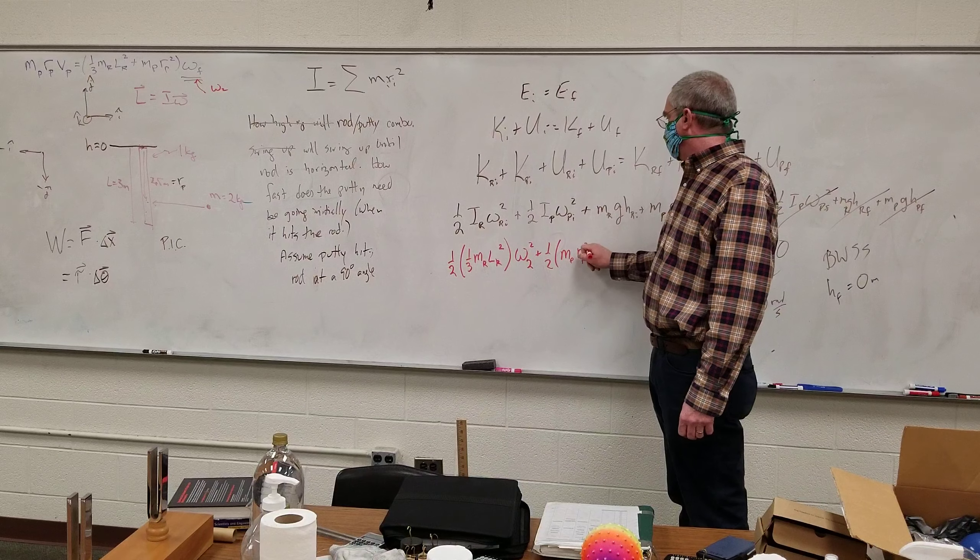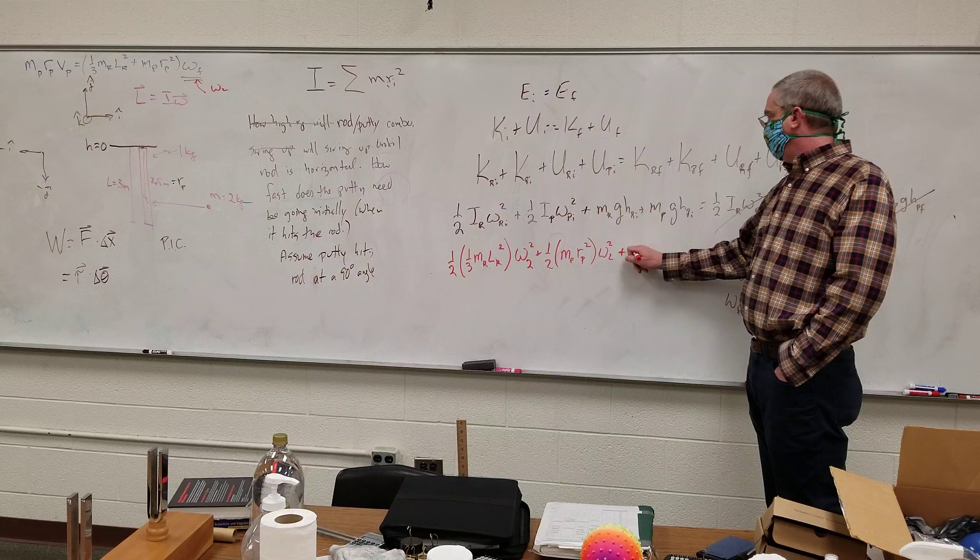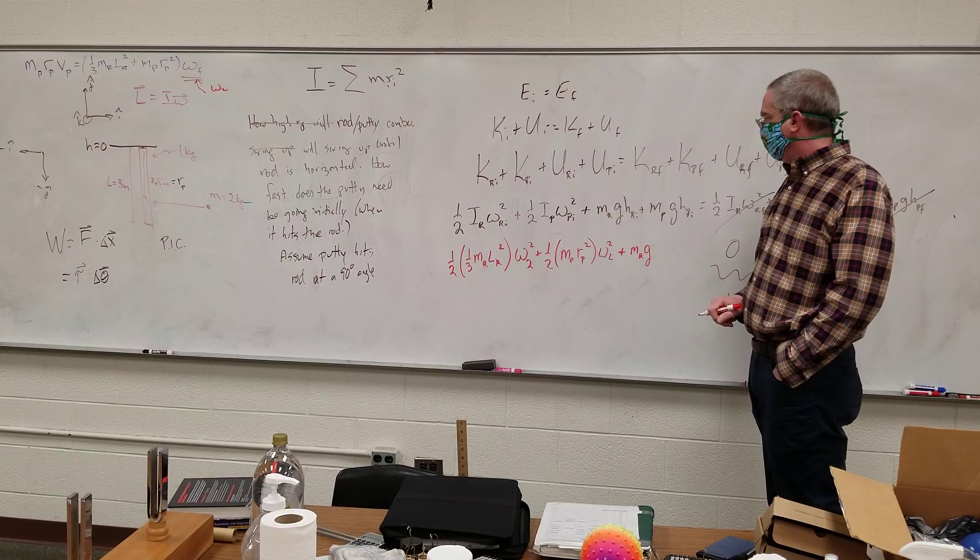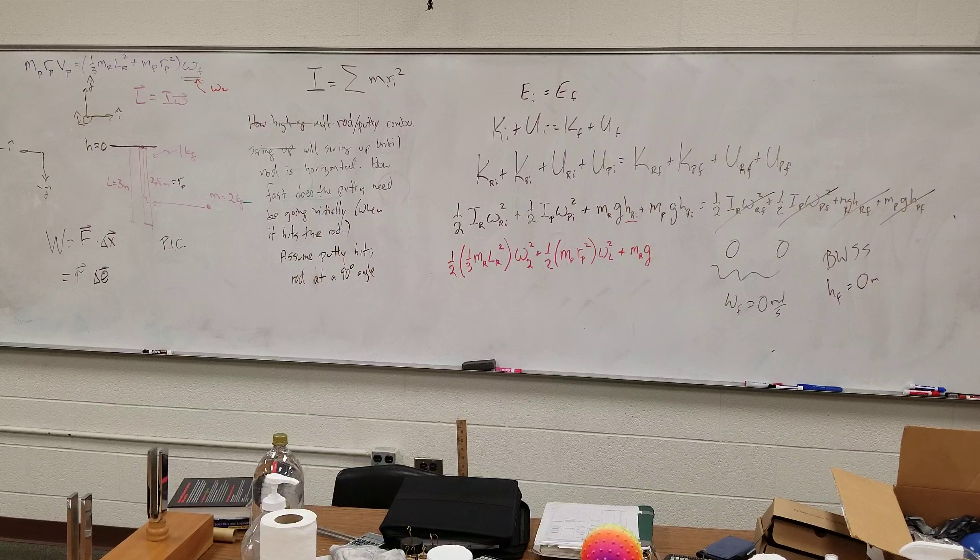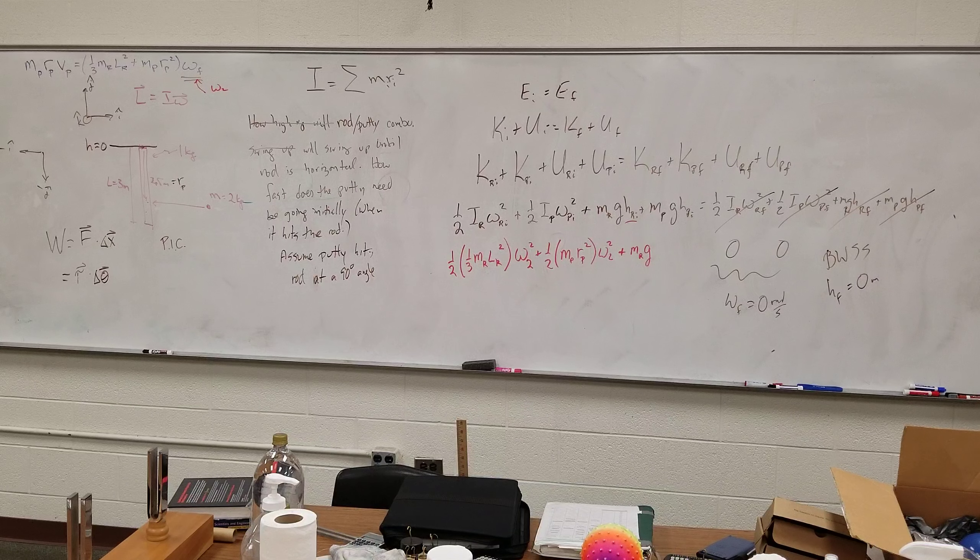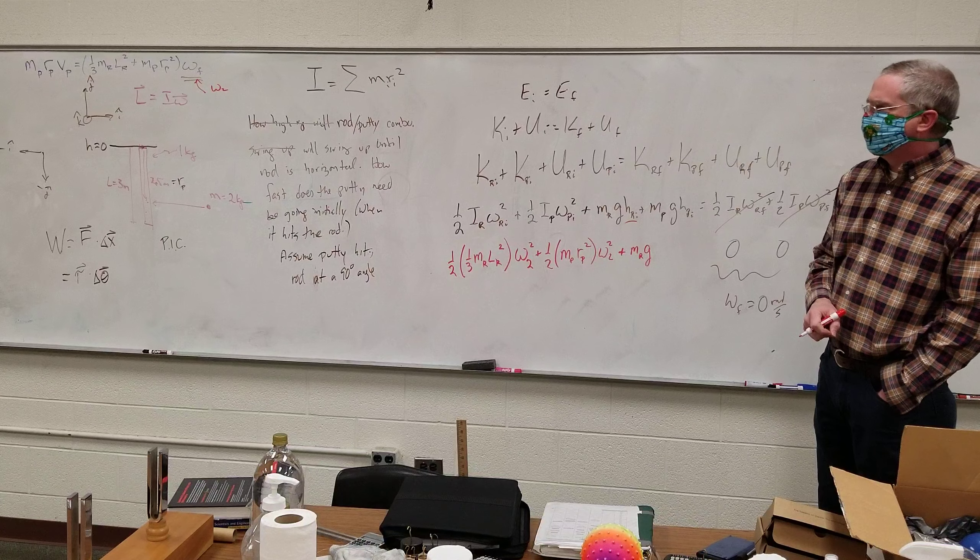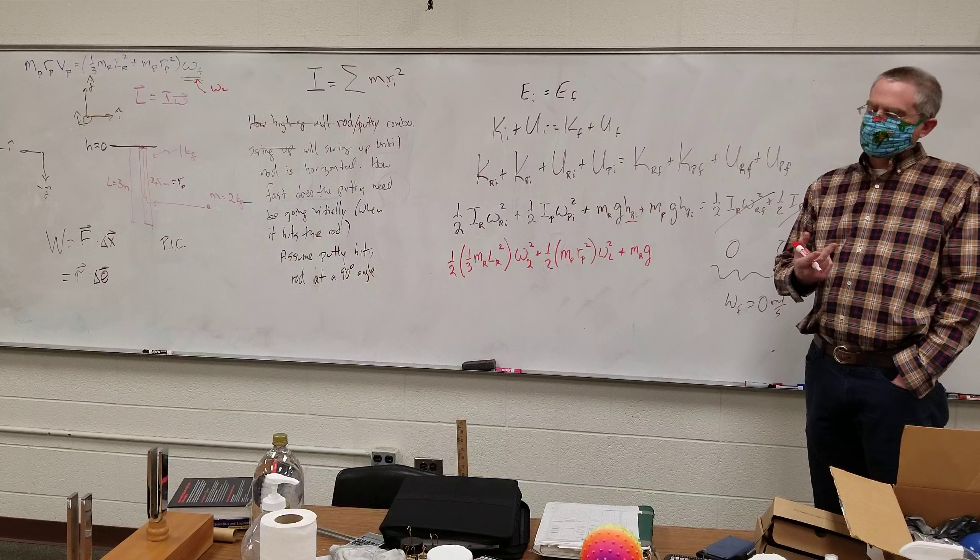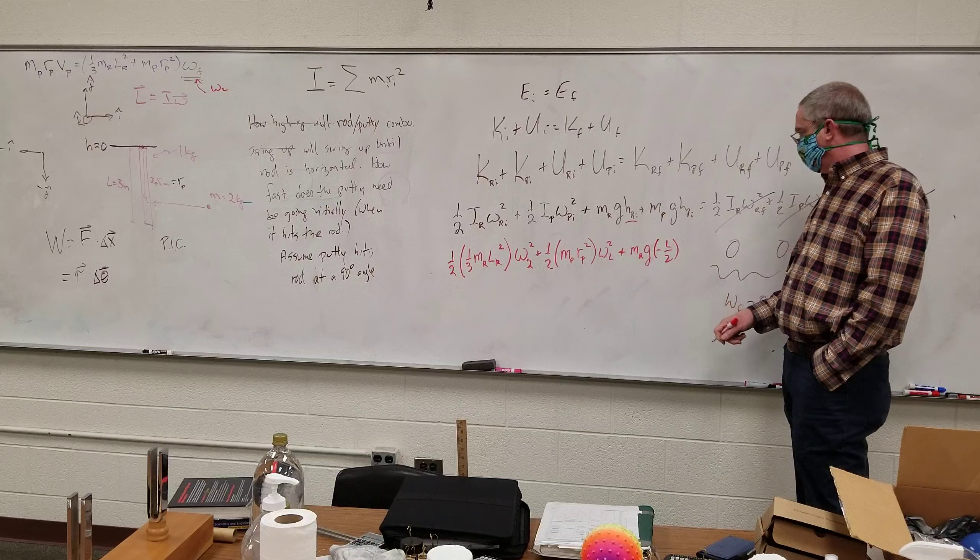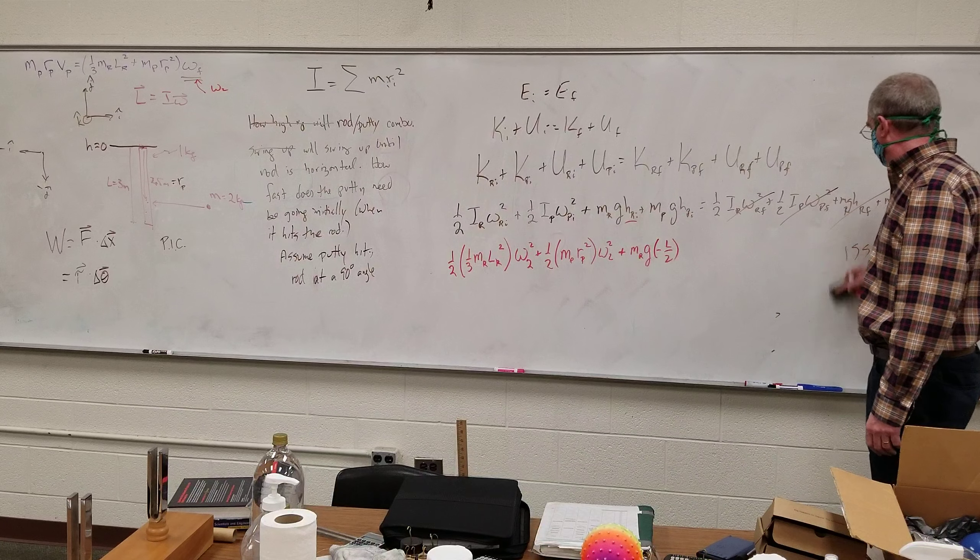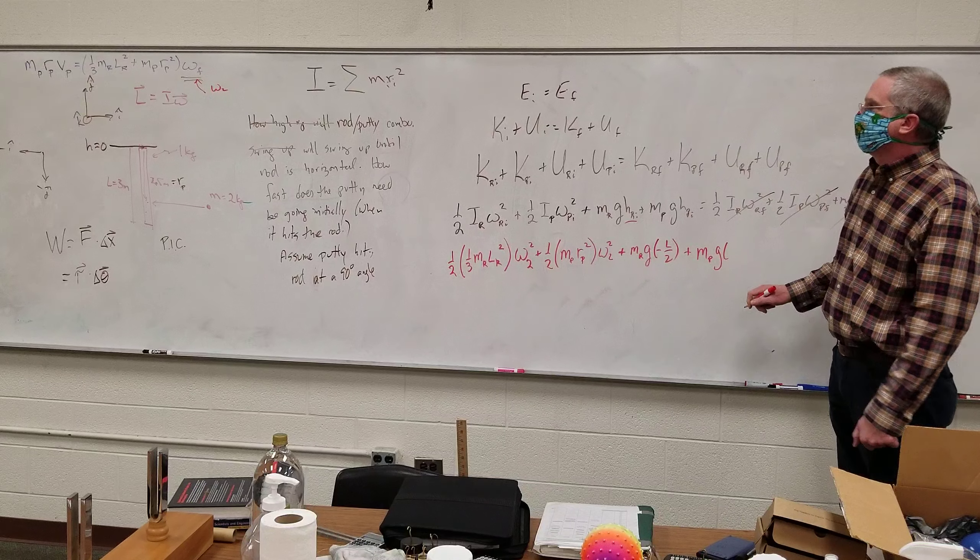Times rp squared times omega 2 squared plus mass of rod, acceleration of gravity of rod times the initial height of the rod. From where h equals 0, negative 3.5 meters? Or just 3, right? Negative 4.5? Do we work with the center? You're working with the center. So negative L over 2, out of room, plus mass of putty G, negative rcp.